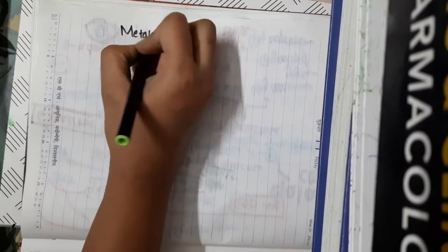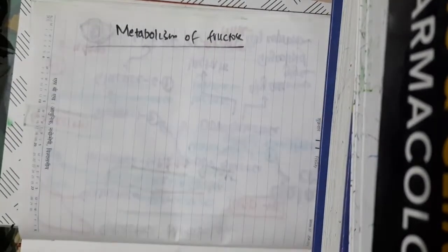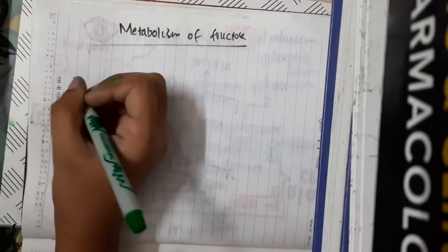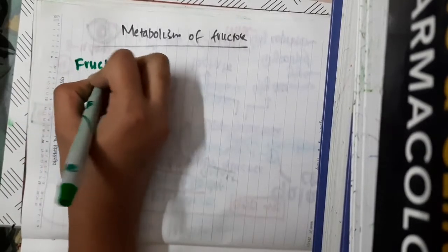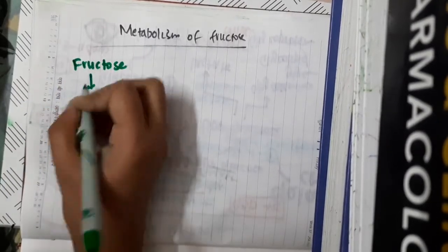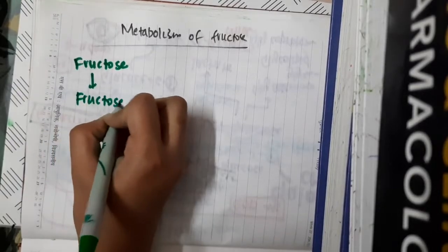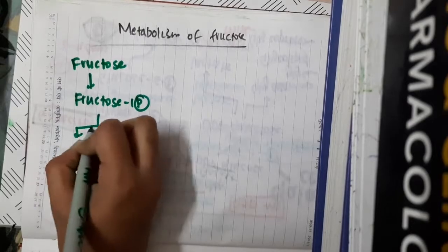Let us now learn some important points about the metabolism of fructose. In fructose metabolism, fructose in the presence of the enzyme fructokinase forms fructose-1-phosphate.